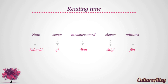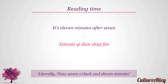Let's try another phrase: it's seven minutes after eleven. Now = xiàn zài, measure word = diǎn, eleven = shí yī, seven = qī, minutes = fēn. Thus, it's eleven minutes after seven will become xiàn zài qī diǎn shí yī fēn, literally meaning 'now seven o'clock and eleven minutes'.